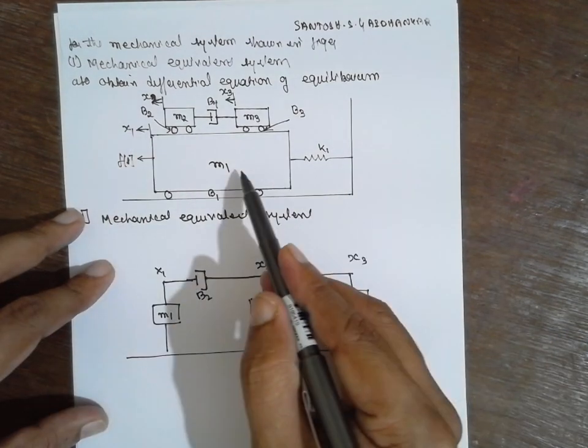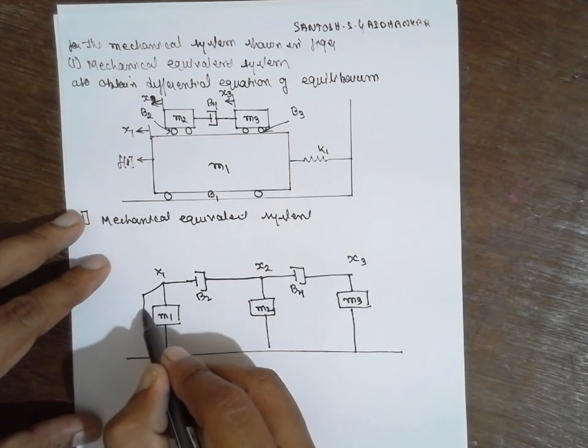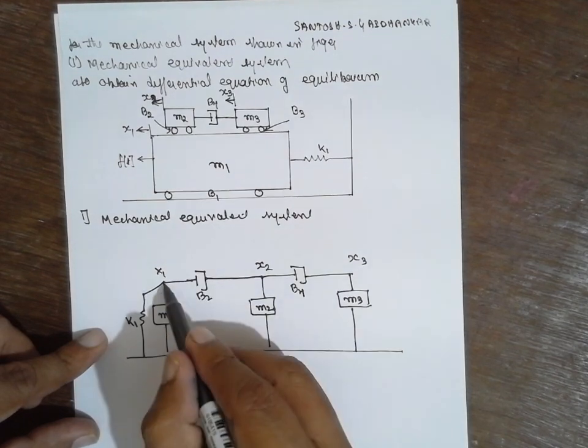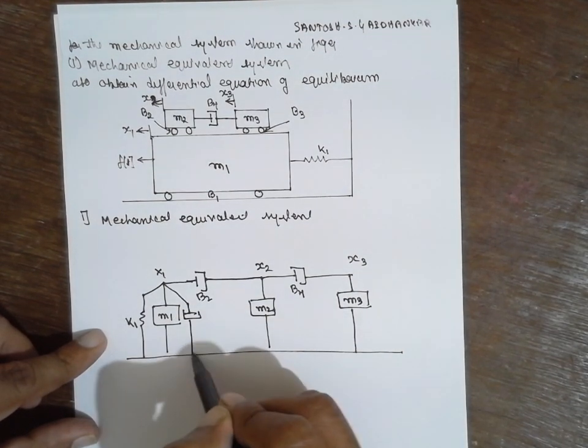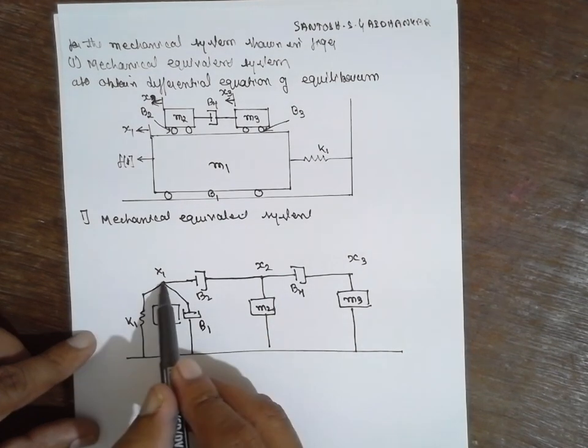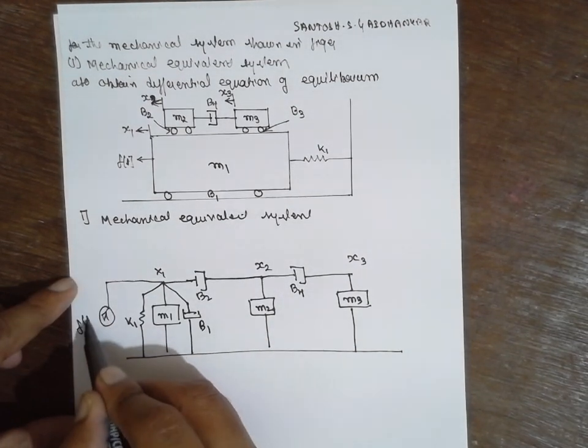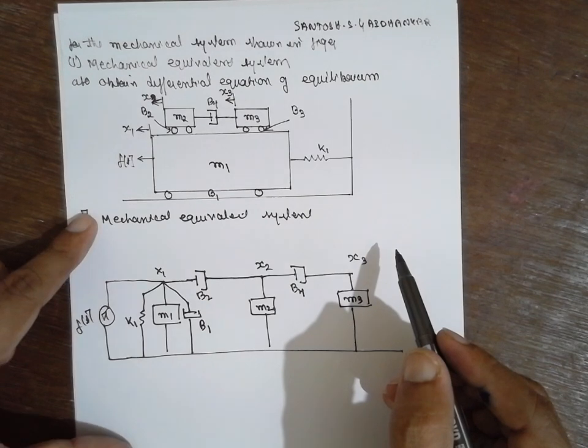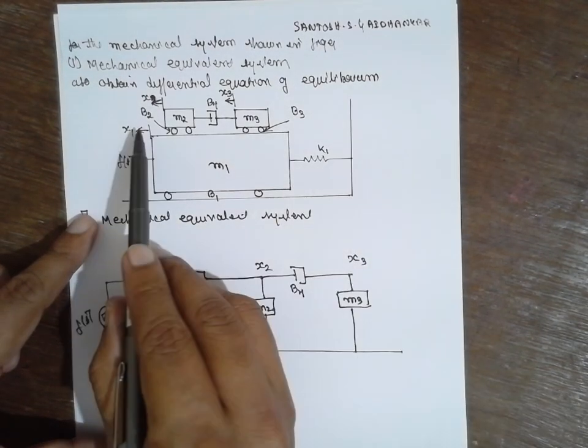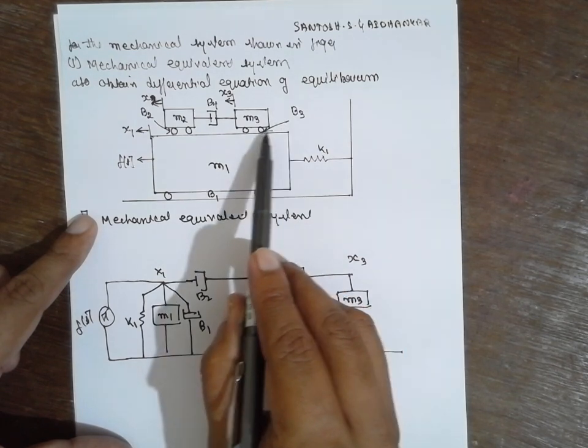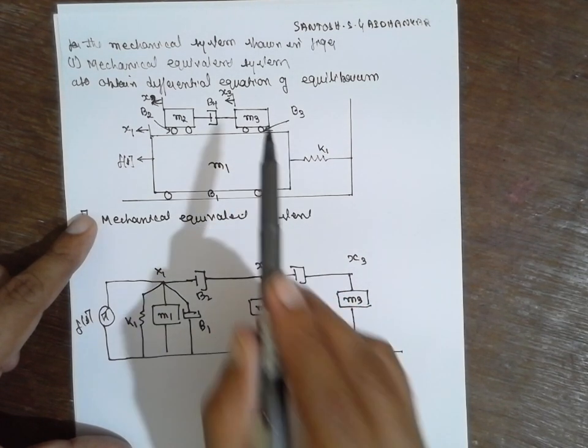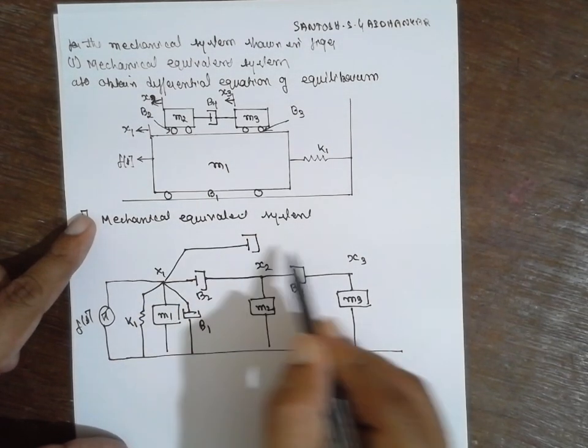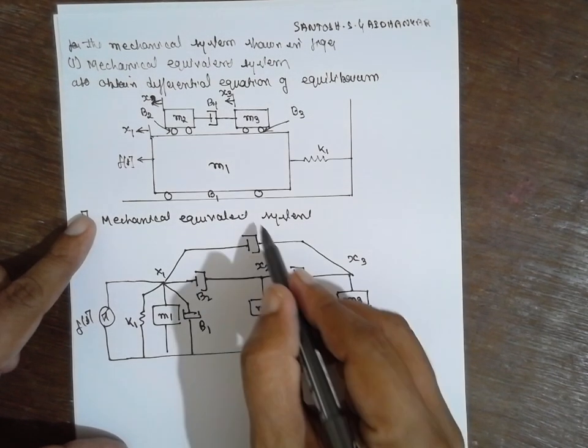Now between X1, there is a mass and spring connected here, K1. Next, a damper is also provided, B1. This would be F(t). Next, between X1 and X3, there is a damper. You have to write it, it is more crucial, be careful while writing this one. That is B3.